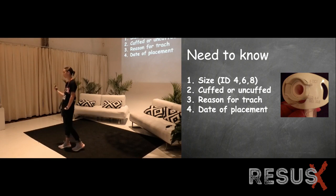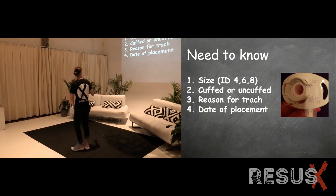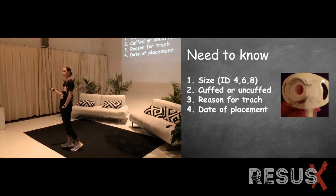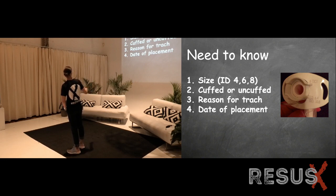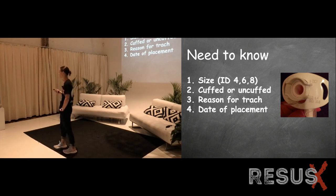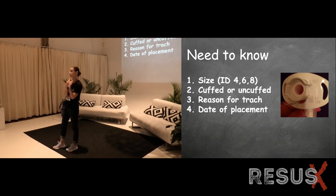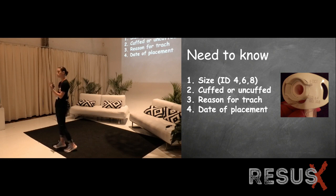There are four pieces of information you need to know. The first two are essential; the last two are less essential. First, the size — you can glance at the neck plate and see, for example, '6-DCT' which stands for disposable cannula tube, meaning the inner cannula is not reusable. Second, is there a cuff — you can see that from the pilot balloon in one second. Third, the reason for trach — nice to know if both vocal cords are paralyzed or there's a large subglottic mass, in case you need to put in a new airway.